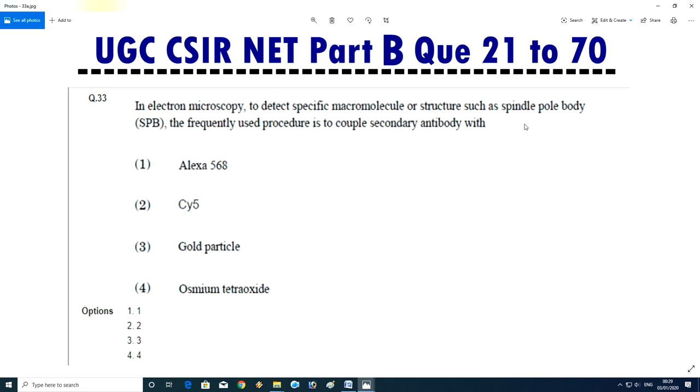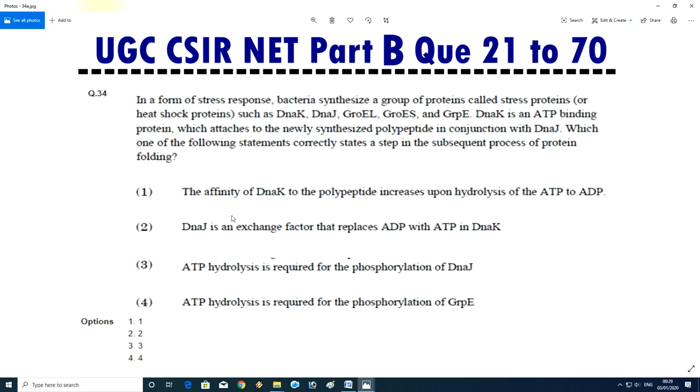Question No.34 - In electron microscopy to detect specific macromolecule or structure such as spindle pole body, the frequently used procedure is to couple secondary antibody with Alexa 488, 568, 565 and Cy5, gold particle, or osmium tetroxide. Answer is third, gold particle.